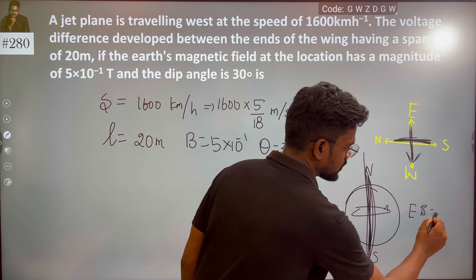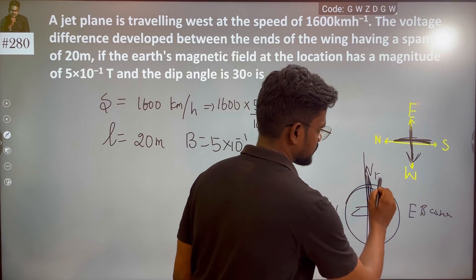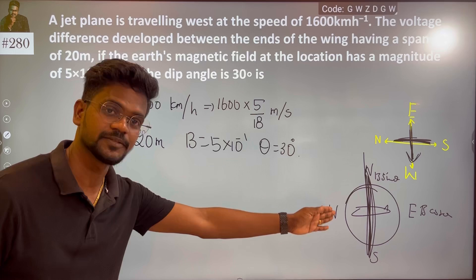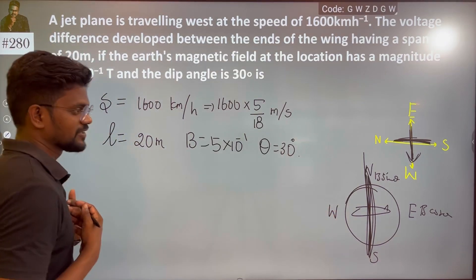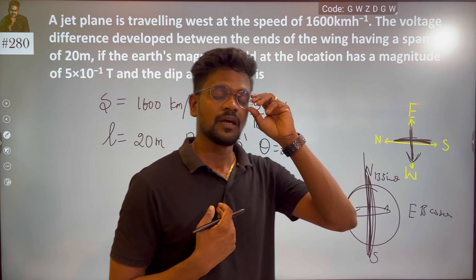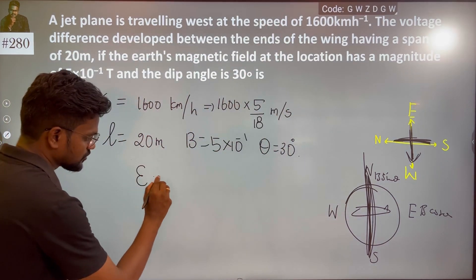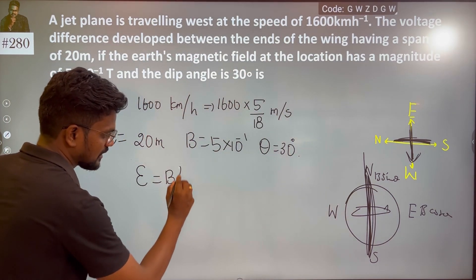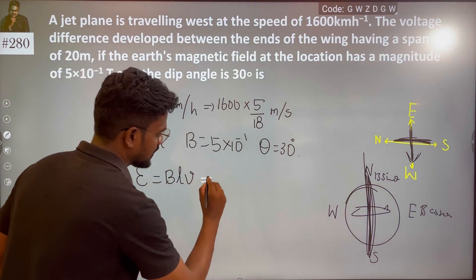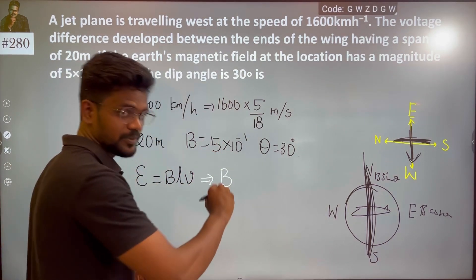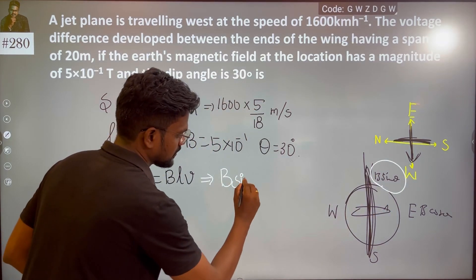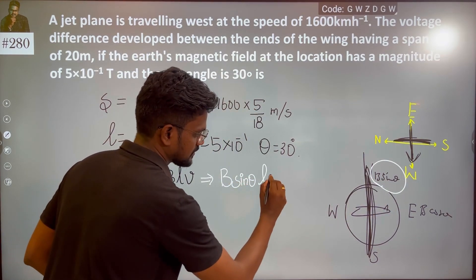This becomes your cos, and this becomes your sin theta — the magnetic field. The plane moves and it has some velocity. Using Faraday's concept, EMF is equal to BLV. Here, B is the vertical component which is B sin theta. So the formula becomes: B sin theta, times length, times velocity.